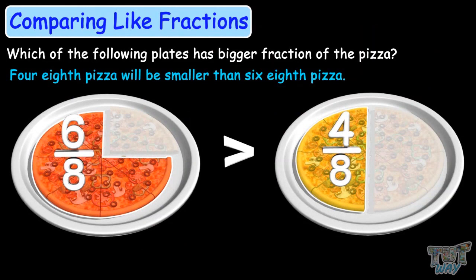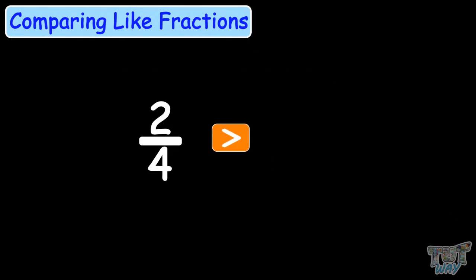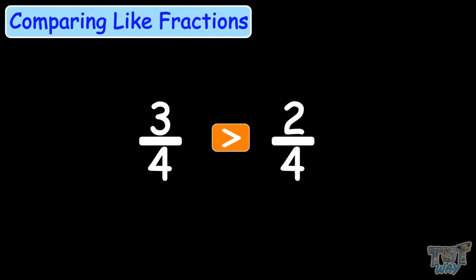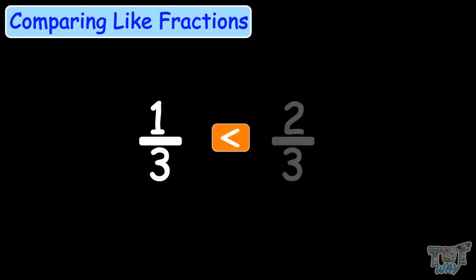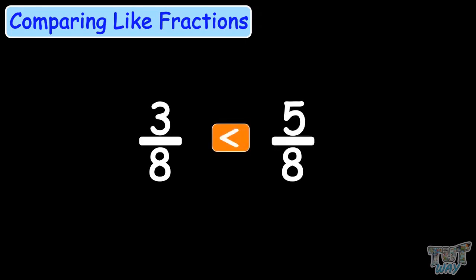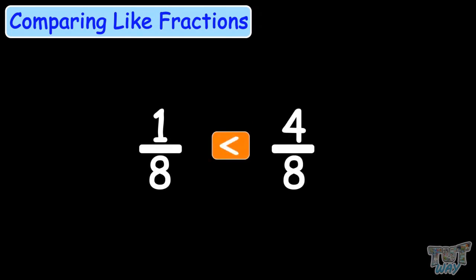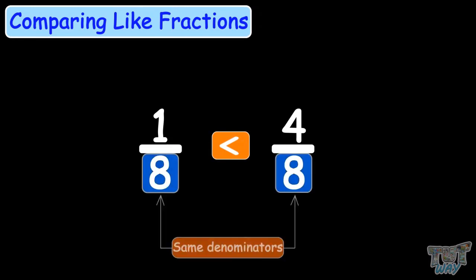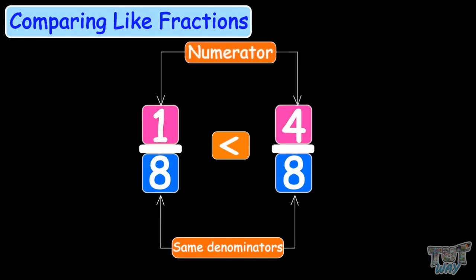Now let's compare more like fractions in a quick fashion. 2 by 4 is greater than 1 by 4. 3 by 4 is greater than 2 by 4. 1 by 3 is less than 2 by 3. 7 by 8 is greater than 3 by 8. 3 by 8 is less than 5 by 8. 1 by 8 is less than 4 by 8. All these are like fractions having the same denominator, and when comparing like fractions, we only compare numerators.